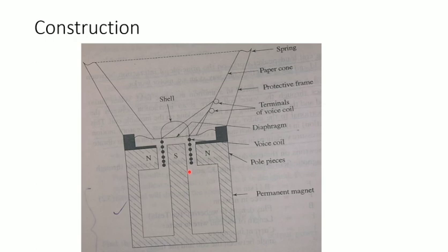The coil acts as an electromagnet. The magnetic field direction is determined by the polarity of the current, and the intensity is determined by the strength of the current.